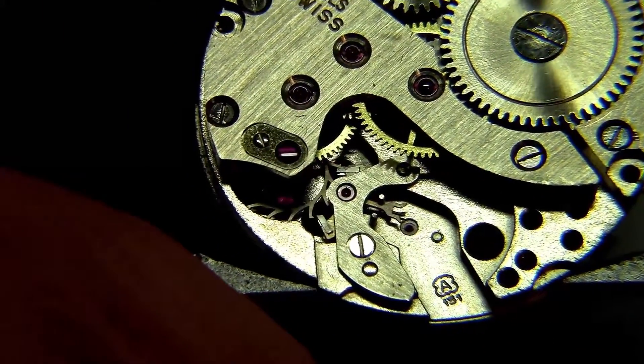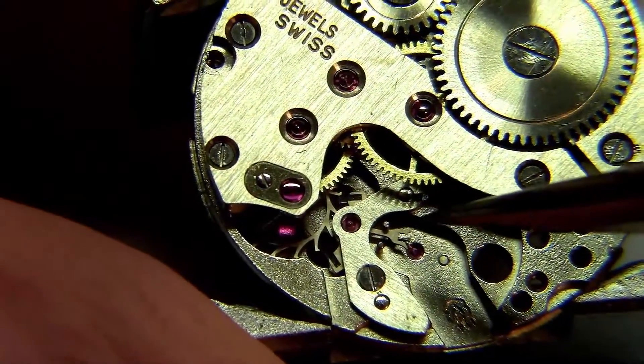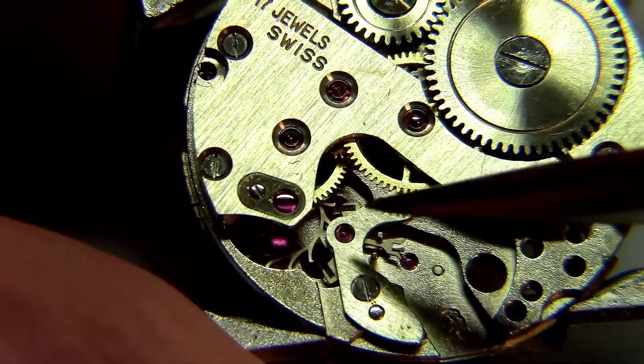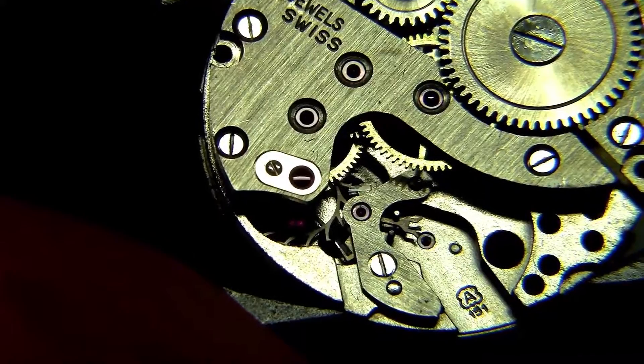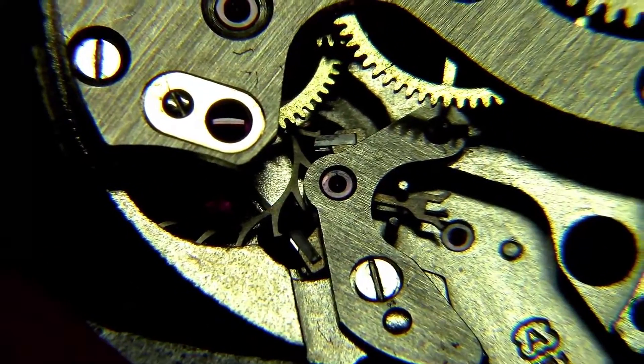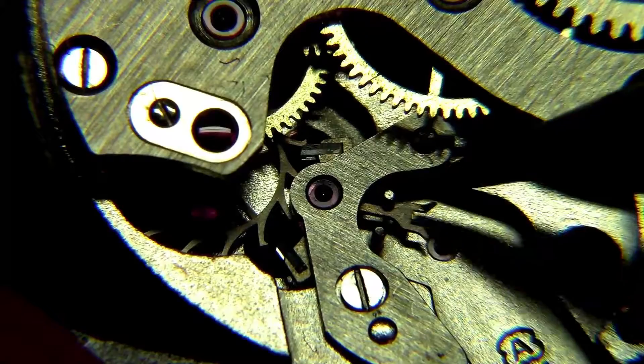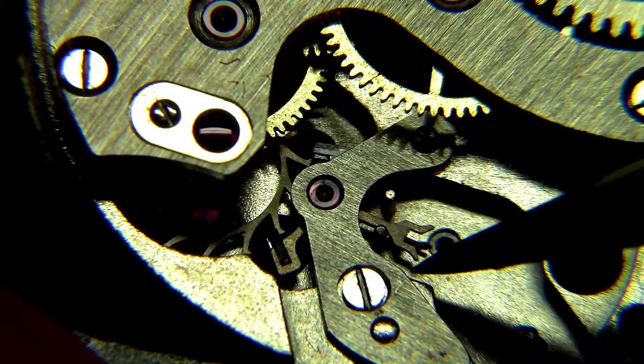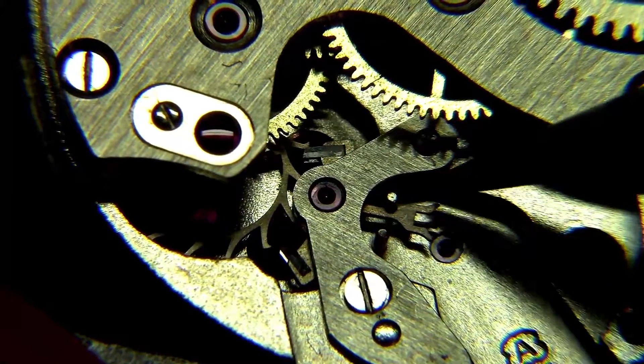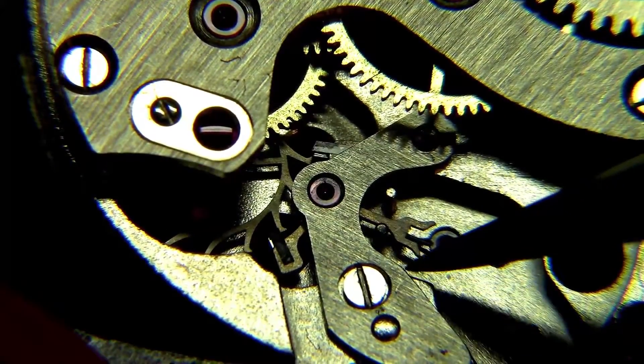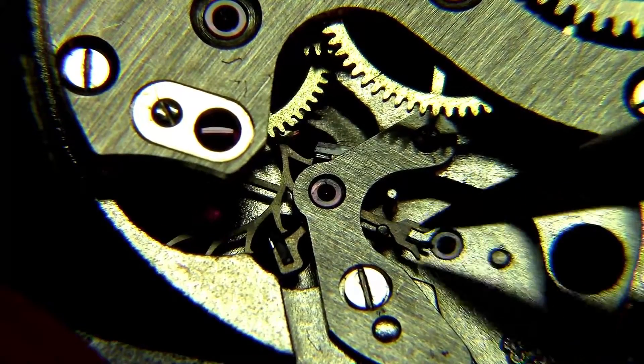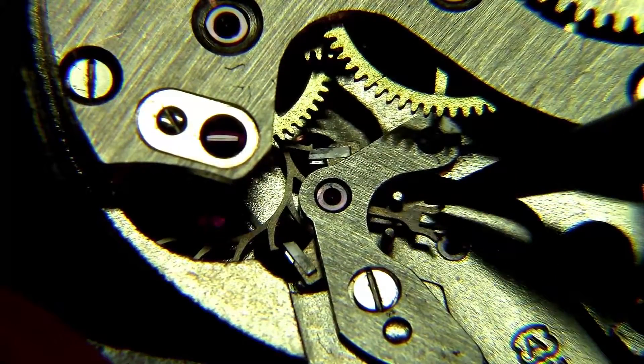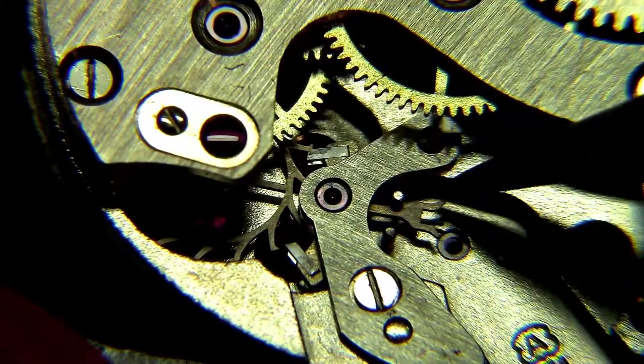Here you can see where the impulse to the balance wheel comes from. All these gears here, they are under tension from the mainspring. And when I touch the pallet fork just slightly, you can see that it runs to the other side because it is receiving impulse from the escapement wheel. And this small impulse here is the impulse that is given to the balance wheel to make it keep moving.